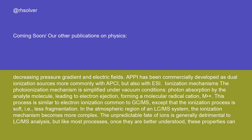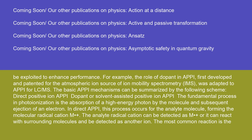Ionization mechanisms: the photoionization mechanism is simplified under vacuum conditions — photon absorption by the analyte molecule leads to electron ejection, forming a molecular radical cation M+•. This process is similar to electron ionization common to GC-MS, except that the ionization process is soft, i.e., less fragmentation. In the atmospheric region of an LC-MS system, the ionization mechanism becomes more complex. The unpredictable fate of ions is generally detrimental to LC-MS analysis, but once better understood, these properties can be exploited to enhance performance.